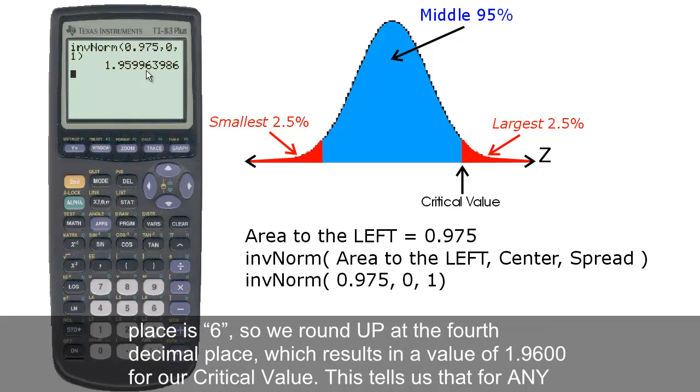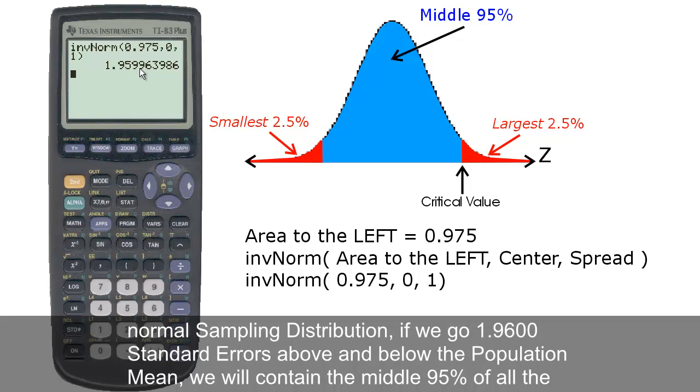So we round up at the fourth decimal place, which results in a value of 1.9600 for our critical value.